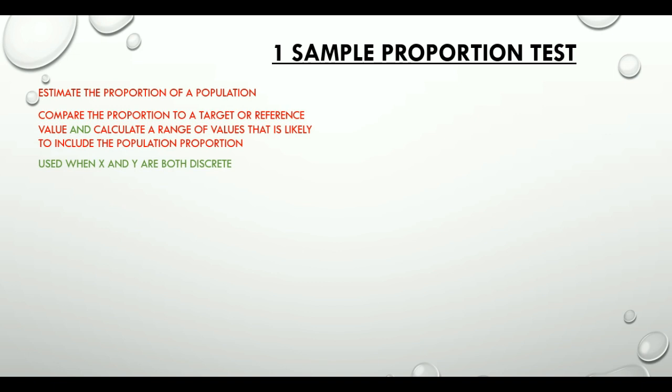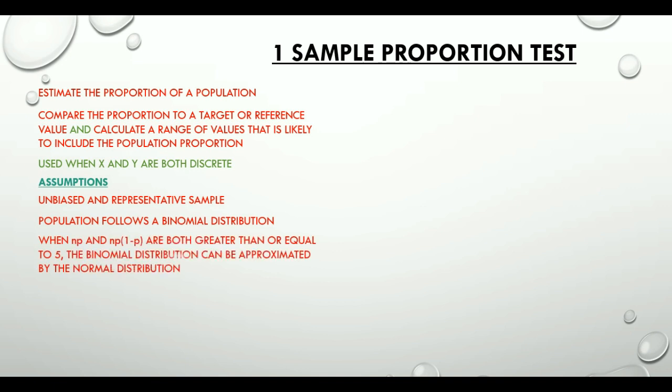We use this test when x or the independent variable and y or the dependent variable are both discrete. Assumptions for this test are that the sample is unbiased and representative, with the population following a binomial distribution.